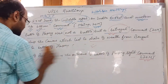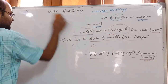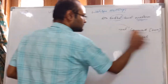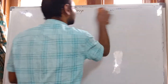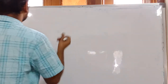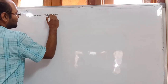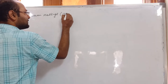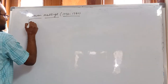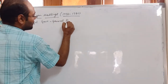After discussing these exam questions, we will move towards today's topic from the UPSC examination point of view: the rule of Warren Hastings, from 1772 to 1785. Warren Hastings was the first Governor General of Bengal.